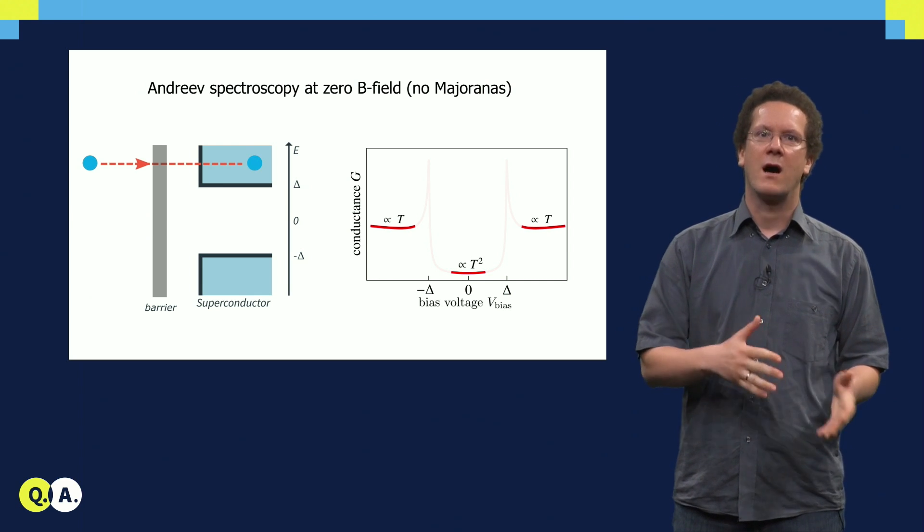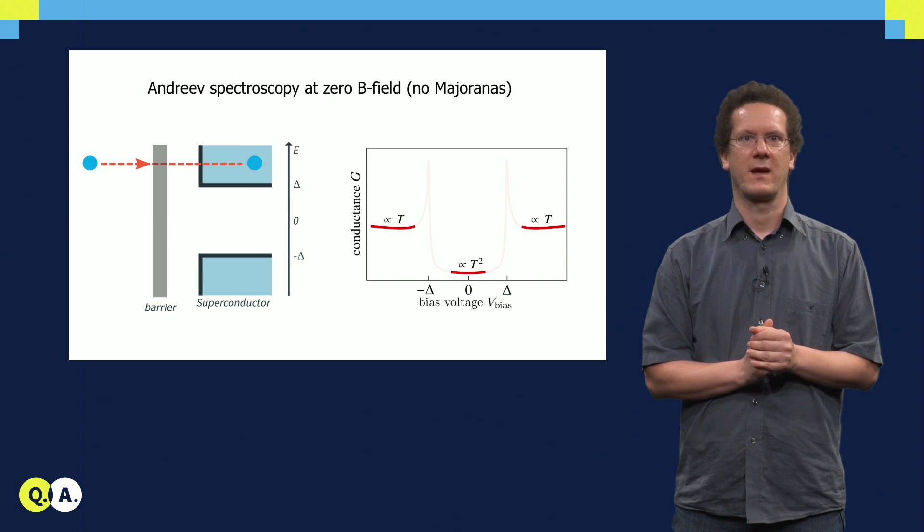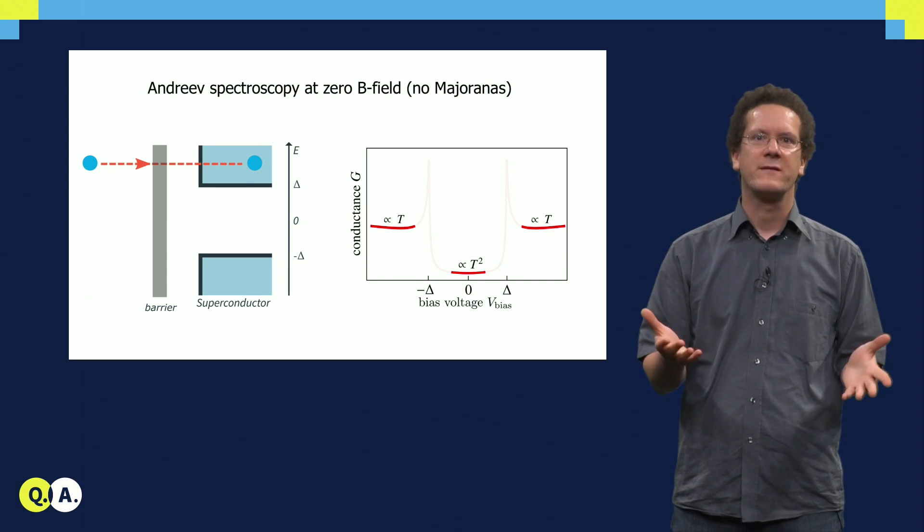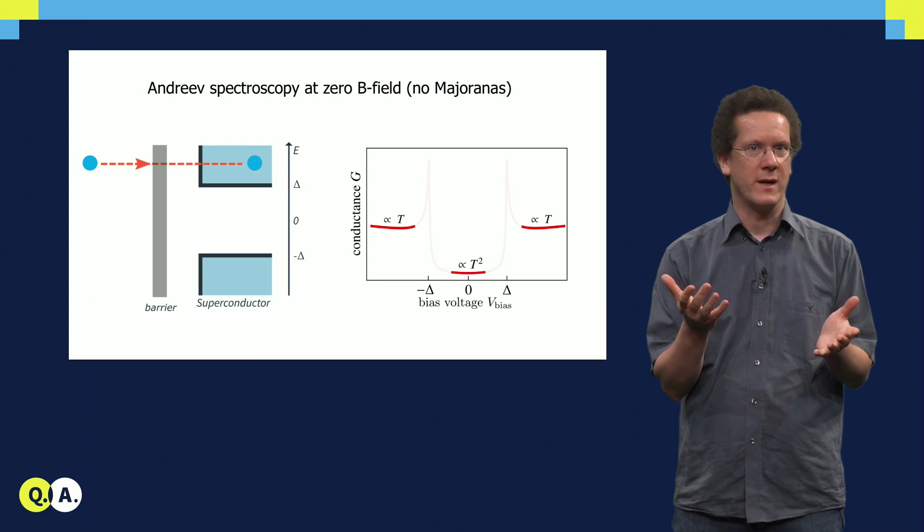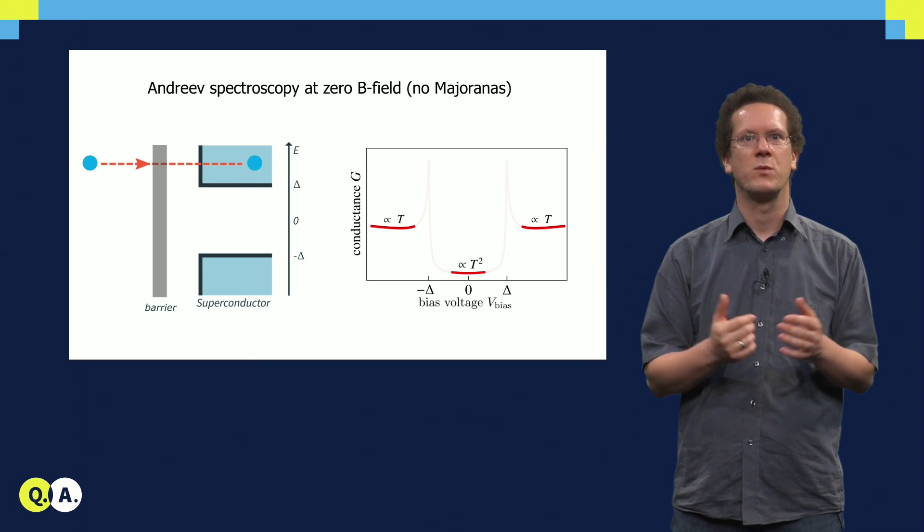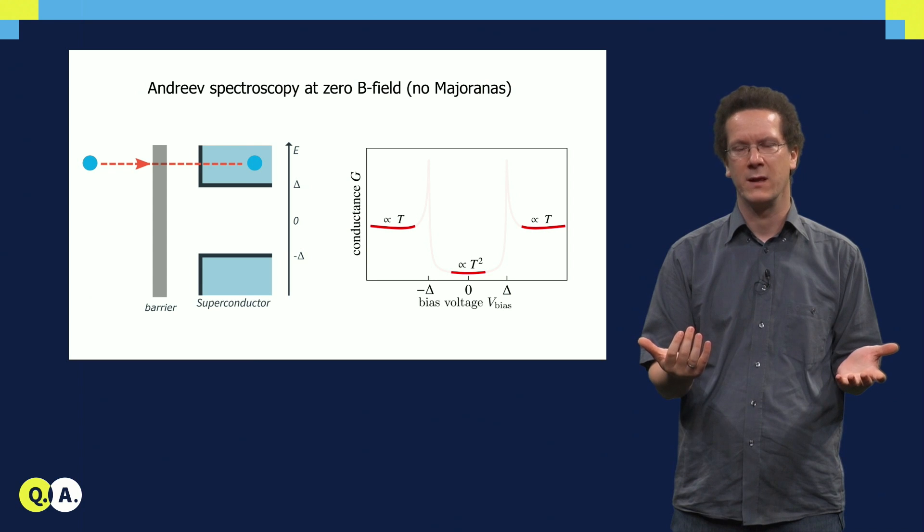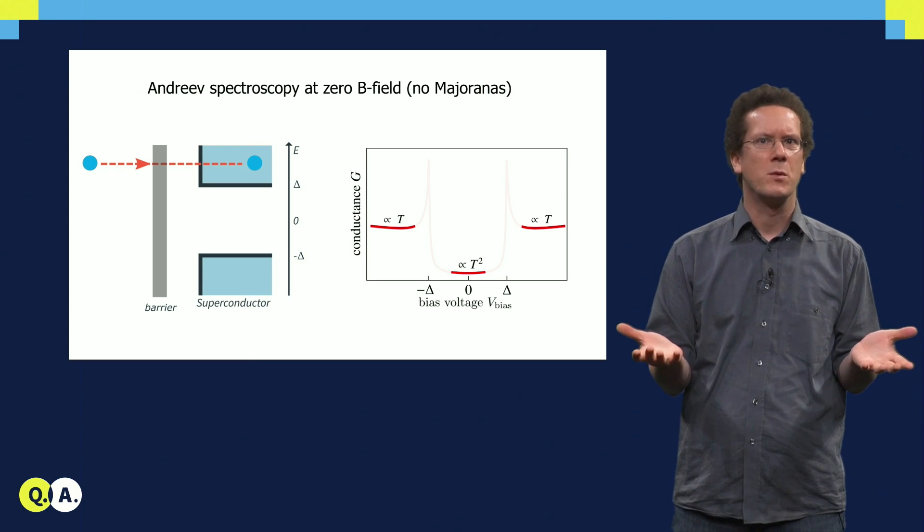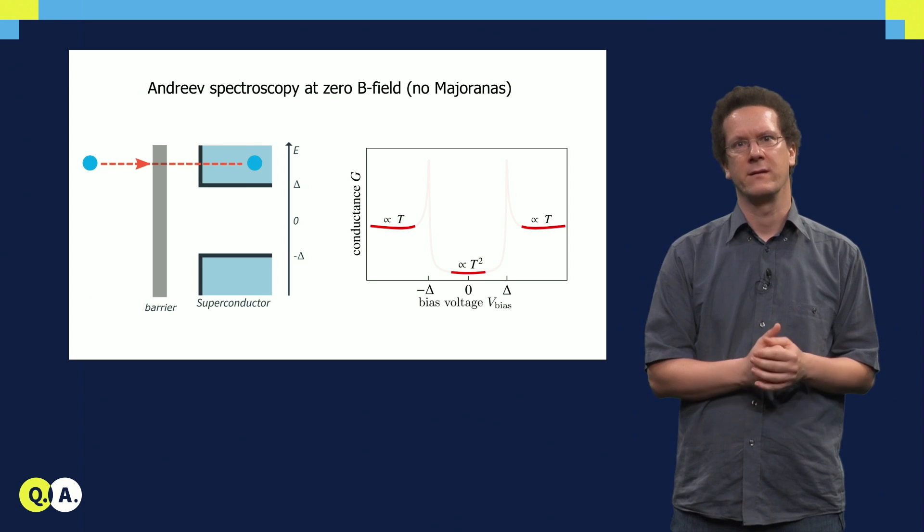For a bias voltage larger than the superconducting gap, the electron can just enter the superconductor as an electron. It thus has to go only once through the barrier, so the conductance is then just proportional to the tunneling probability t. Since t is less than 1, this probability is higher than the previous case.